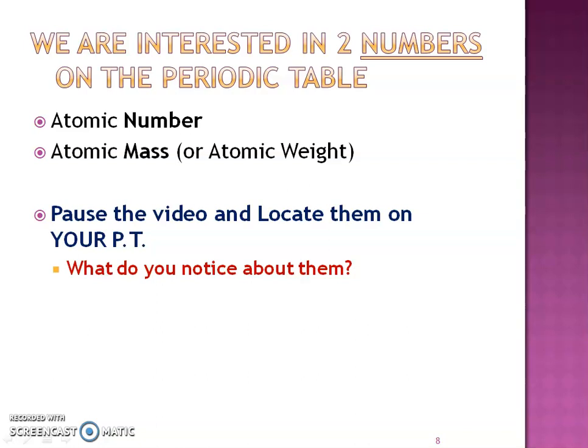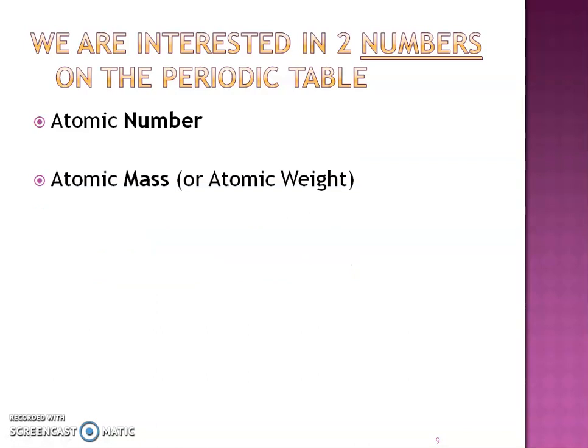For this particular chapter, we're interested in two numbers: the atomic number and the atomic mass. I'd like you to pause the video, locate them on your periodic table, and see what you notice about them as you look through the periodic table. Hopefully this makes sense. The atomic number, you should have noticed, goes in order by ones: one, two, three, four, five. So if I give you an atomic number for an element, it should be really easy to find.